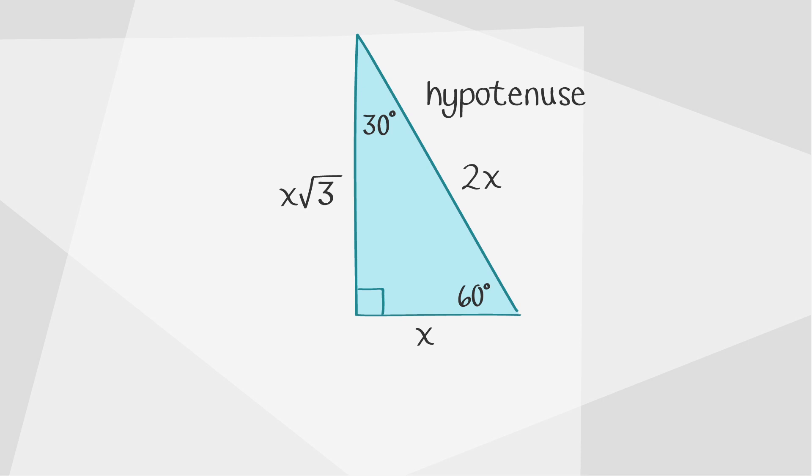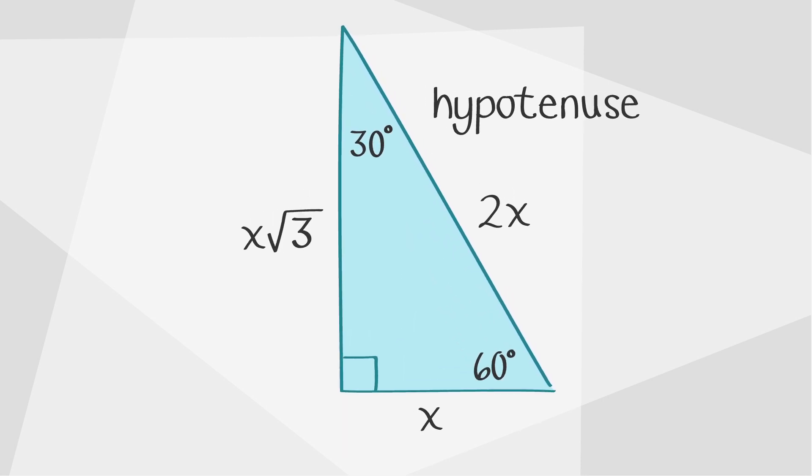How does this help us? Let's say we have a 30-60-90 triangle, and we know that the side opposite the 30-degree angle has a length of 4. That means the side opposite the 60-degree angle has a length of 4 times the square root of 3, and the hypotenuse opposite the right angle, 2x, equals 8.